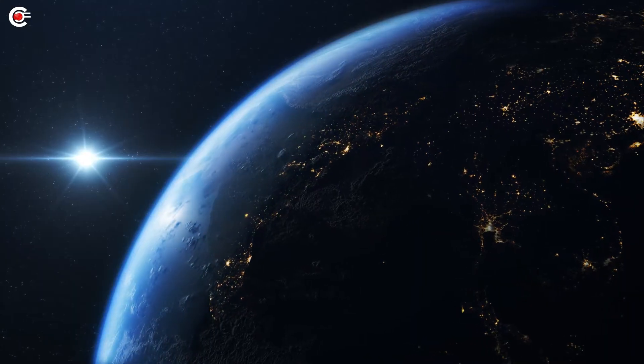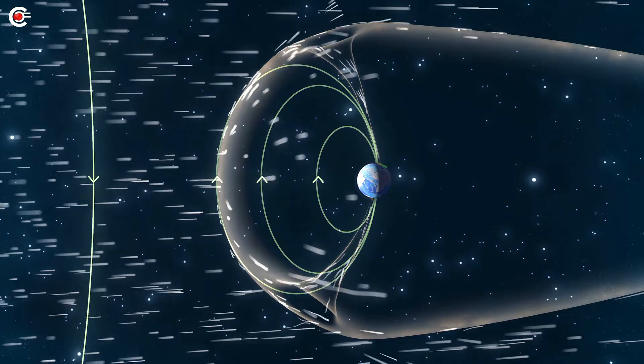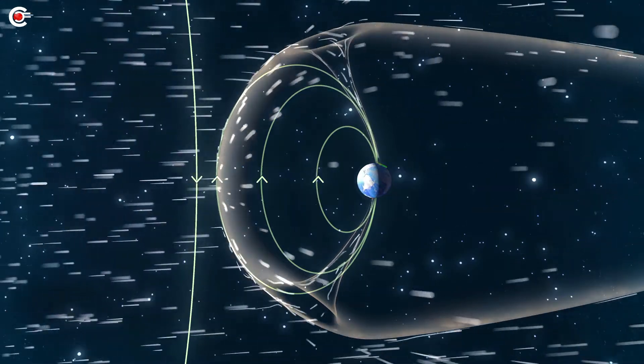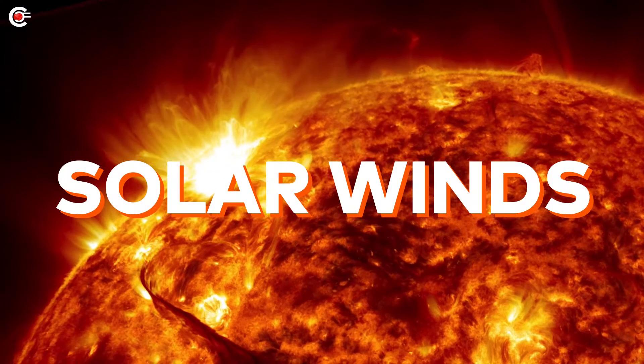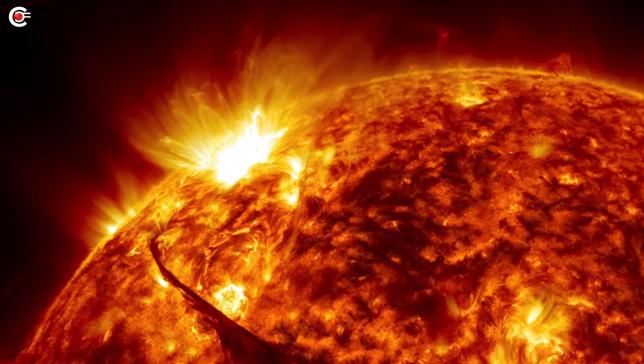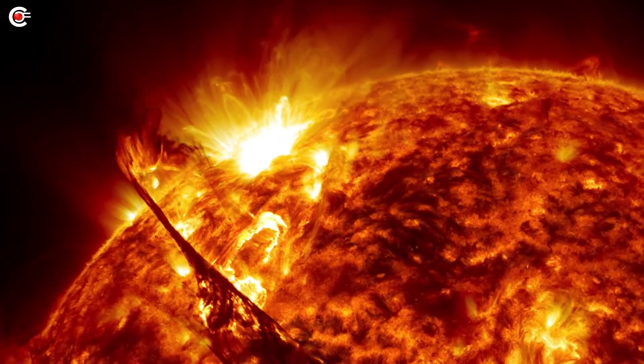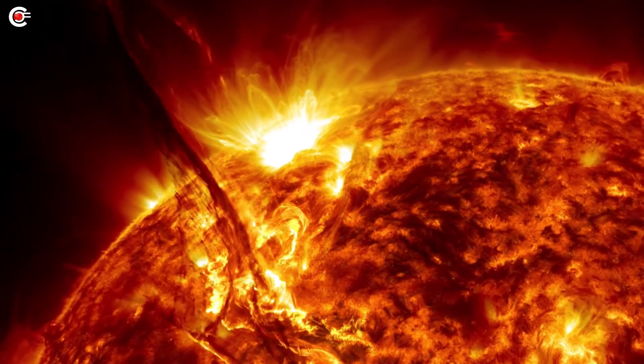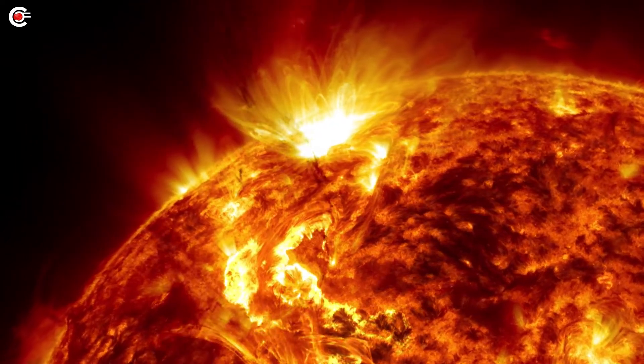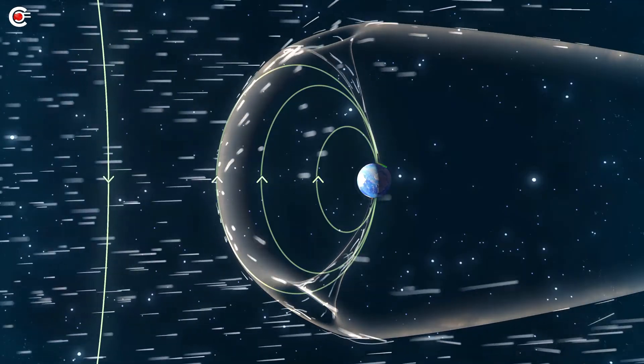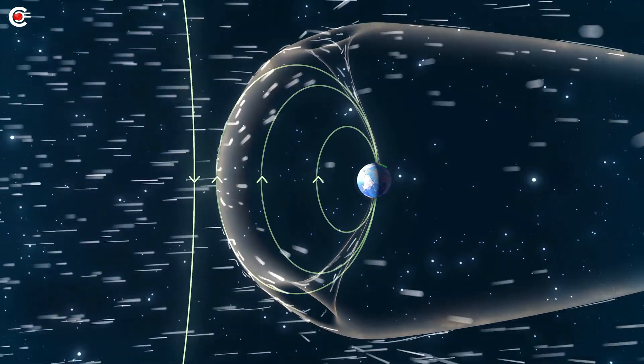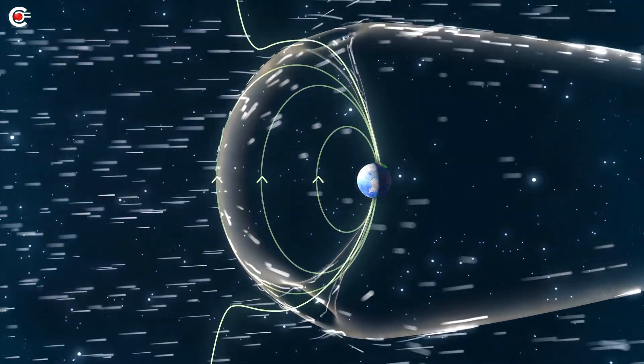Even if life started to form on Earth, it would have never survived if there was no magnetic field protecting Earth from extremely harmful solar winds. Solar winds are streams of highly charged particles released from the upper atmosphere of the Sun. Moving at 8 million miles per hour, they carry millions of tons of matter with them. And if there was no magnetic field around Earth, then the atmosphere would have been completely destroyed.